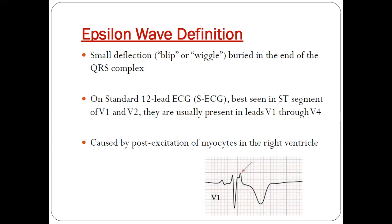These epsilon waves are usually seen in patients with arrhythmogenic right ventricular cardiomyopathy or right ventricular dysplasia, where the right ventricle myocardium is replaced by fatty tissue or fibrous tissue. These fats and fibrous tissue get deposited inside the myocardium.